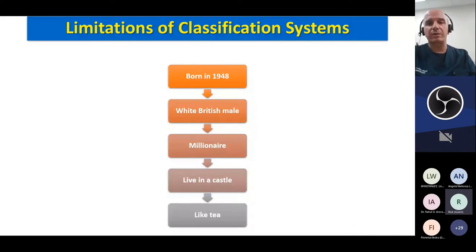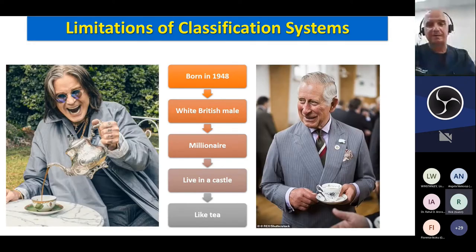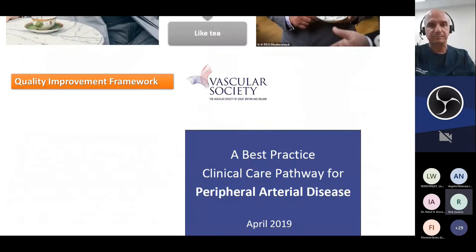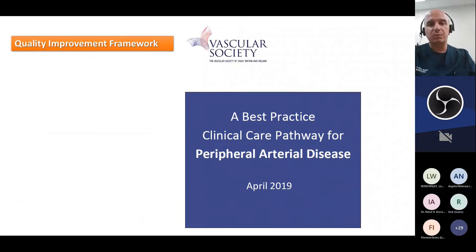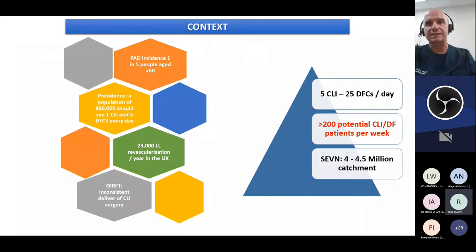We need to be wary about classification systems because they can sometimes be misleading and never fully picture the reality. They can summarize a complex condition in simple words, but every patient is different. The new NHS England and Vascular Society recommendations for critical limb ischemia are based on the increased prevalence of this population in our community.